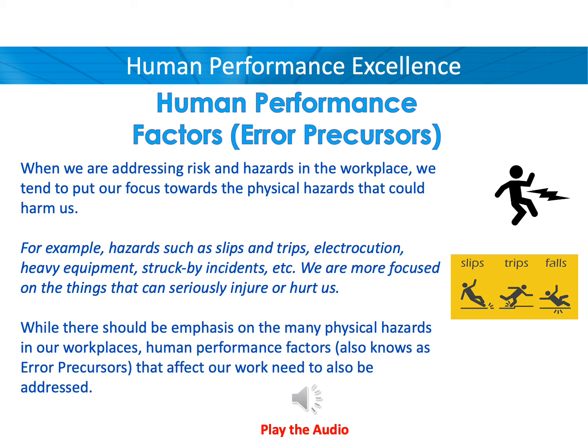Human performance factors. When addressing hazards in the workplace, most of the focus is put towards physical hazards that could harm us — such as slips and trips, electrocution, heavy equipment, struck-by incidents, etc. While there should be emphasis on the many physical hazards in our workplace, human performance factors, also known as error precursors, that affect our work need to also be addressed.